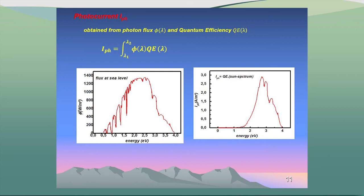I calculated the photo current, which is very important for photovoltaics. This calculation is performed using this formula — this is the flux, and this is the quantum efficiency that I presented in the last slide. This is the solar flux, and here is the quantum efficiency times the flux, giving me this curve shape.